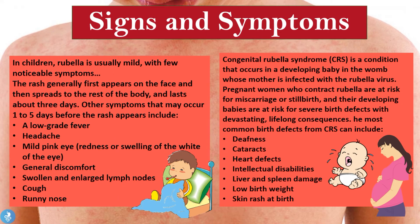Let's now explore the signs and symptoms of rubella. In children, rubella is usually mild with few noticeable symptoms. The rash generally first appears on the face and then spreads to the rest of the body, lasting about three days. Other symptoms that may occur one to five days before the rash appears include a low-grade fever, headaches, mild pink eye (redness or swelling of the whites of the eye), general discomfort, swollen and enlarged lymph nodes, coughing, and a runny nose.